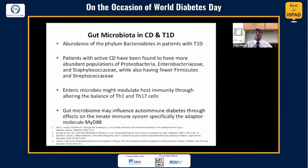In terms of gut microbiome, there has been an abundance of the phylum Bacteroides in patients with type 1 diabetes. Patients with active celiac have a more abundant population of Proteobacteria, Enterobacteria, and Staphylococci, with fewer Firmicutes, Enterococci, and Streptococci. Enteric microbes might actually modulate host immunity through altering the balance between TH1 and TH17 cells. The gut microbiome may influence autoimmune diabetes through effects on the innate immunity system, specifically the adaptor molecule MYD88.